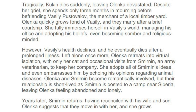Tragically, Kukin dies suddenly, leaving Olenka devastated. Despite her grief, she spends only three months in mourning before befriending Vasily Postovalov, the merchant of a local timber yard. Olenka quickly grows fond of Vasily and they marry after a brief courtship. She fully immerses herself in Vasily's world, managing his office and adopting his beliefs, even becoming somber and religious-minded. However, Vasily's health declines and he eventually dies after a prolonged illness. Left alone once more, Olenka retreats into virtual isolation, with only her cat and occasional visits from Smyrnin, an army veterinarian, to keep her company. She adopts all of Smyrnin's ideas and even embarrasses him by echoing his opinions regarding animal diseases. Olenka and Smyrnin become romantically involved, but their relationship is short-lived, as Smyrnin is posted to a camp near Siberia, leaving Olenka feeling abandoned and lonely.